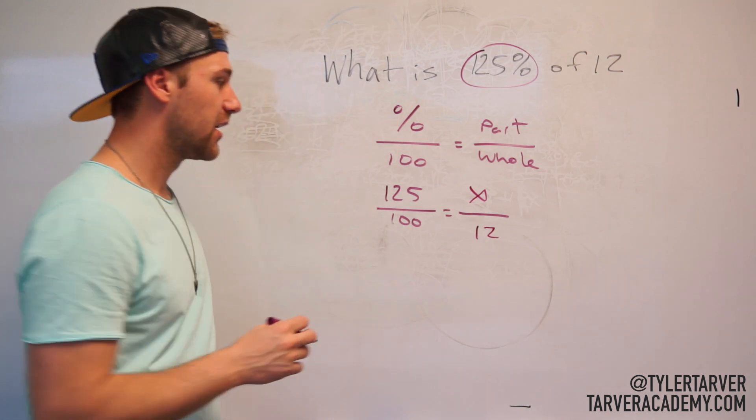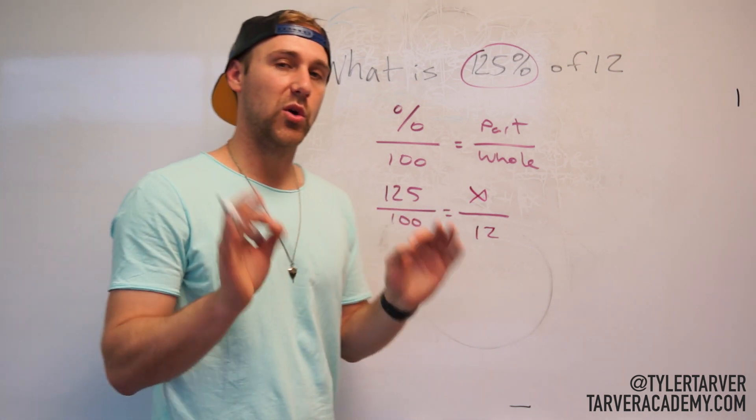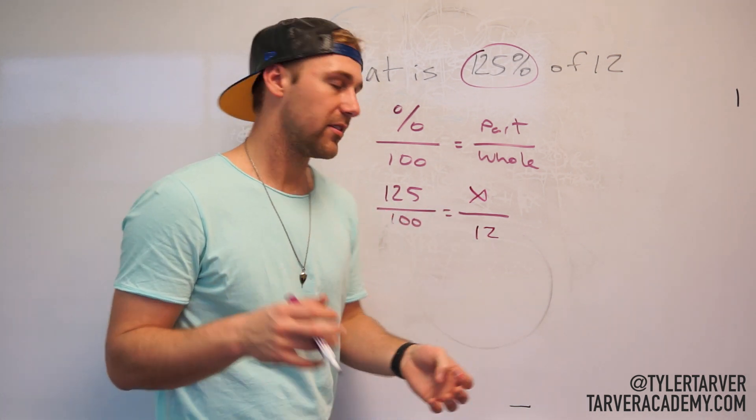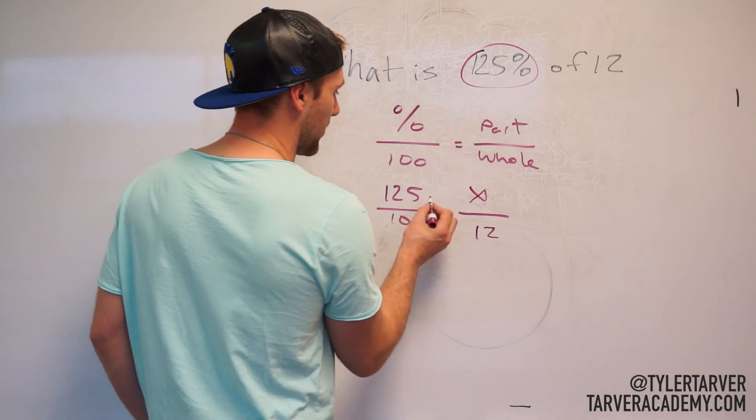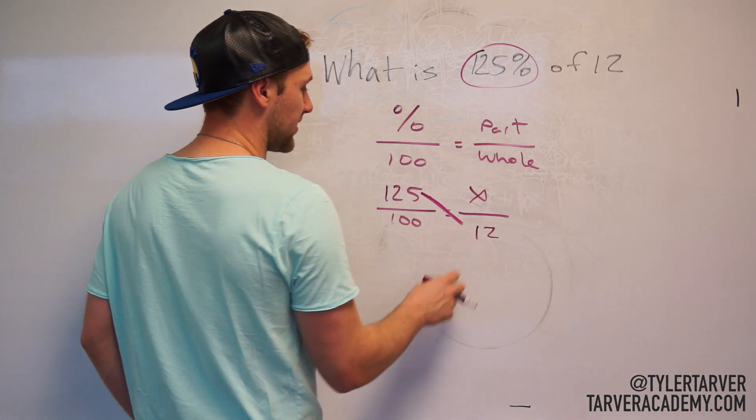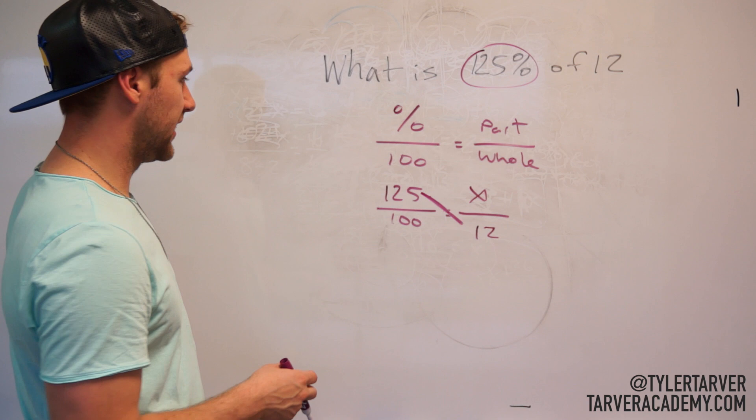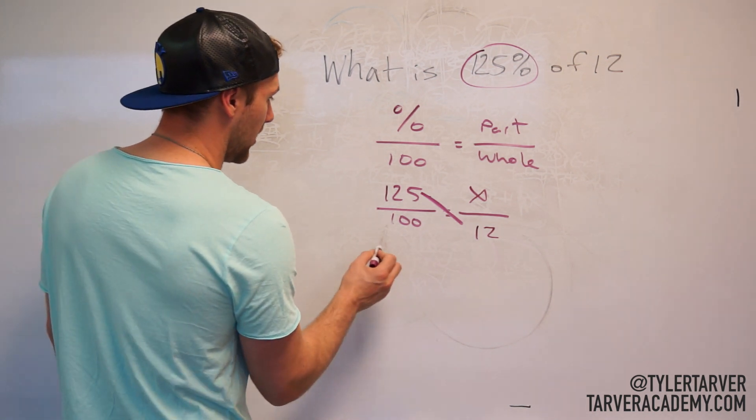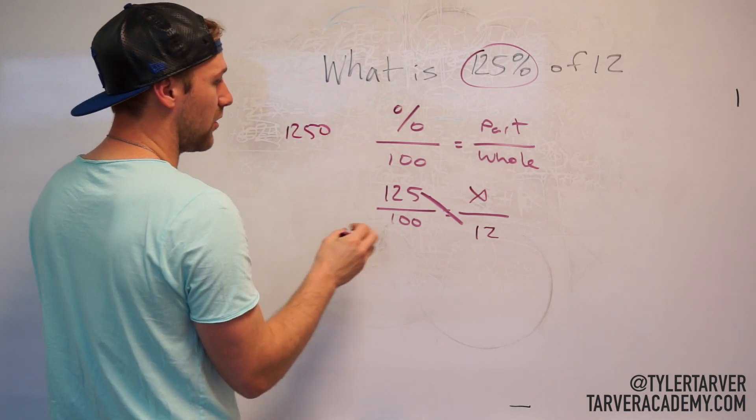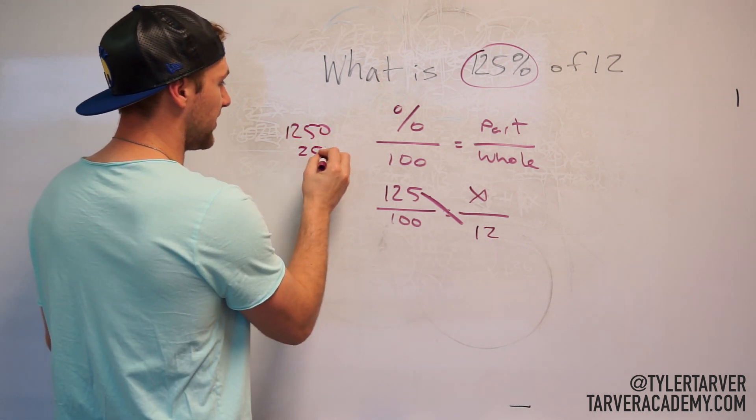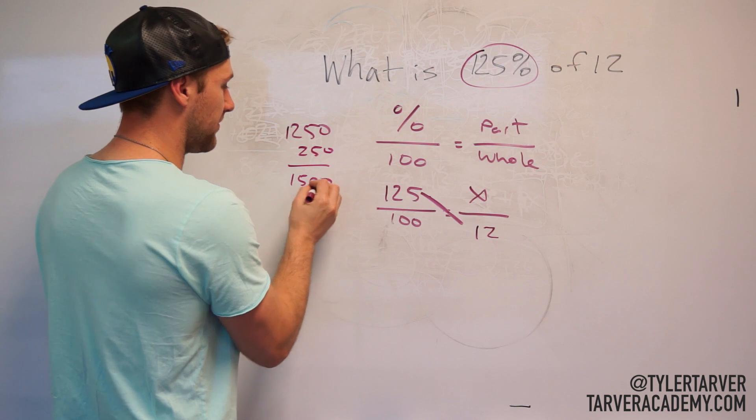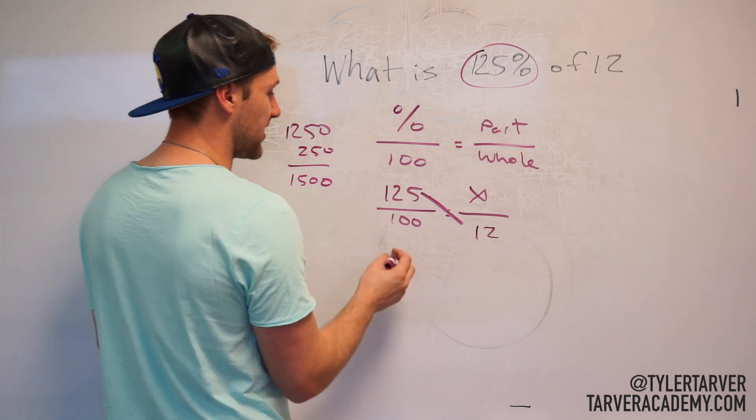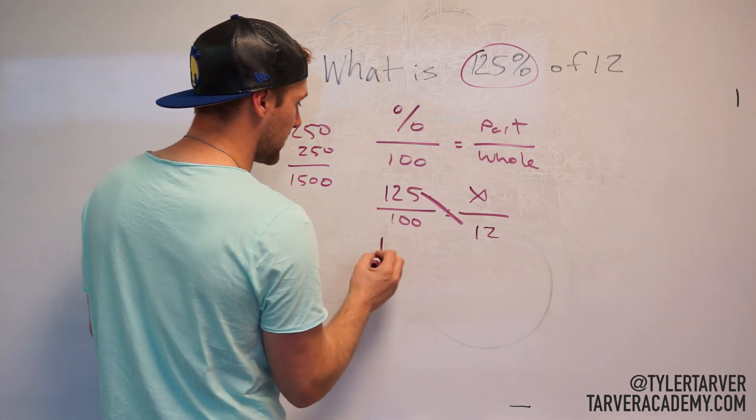From here all you do is cross multiply and divide. So I cross multiply, so I would do 125 times 12, which is oh dear that's a big number. It'd be 1250 and then plus 250, so 1500. That's a big number, sorry.